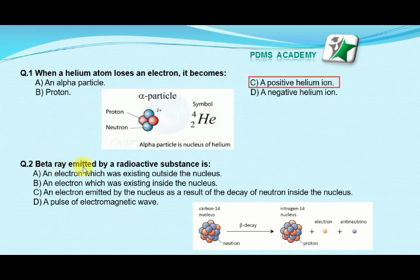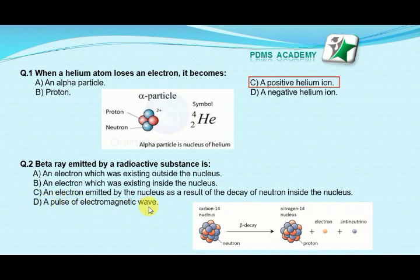Our next MCQ is: beta rays emitted by a radioactive substance are — option A: an electron existing outside the nucleus, option B: an electron existing inside the nucleus, option C: an electron emitted by the nucleus as a result of decay of a neutron inside the nucleus, option D: a pulse of electromagnetic wave. Our correct answer is B: an electron which was existing inside the nucleus. Beta rays are actually electrons emitted from within the nucleus.